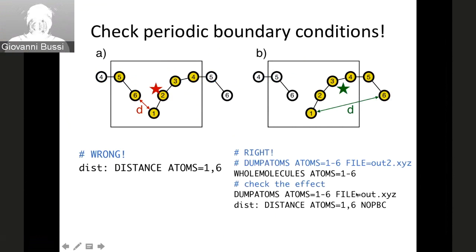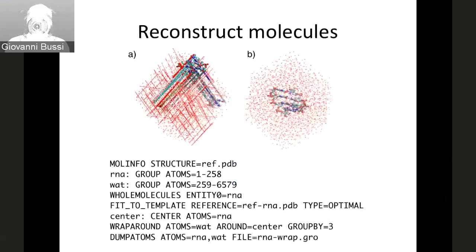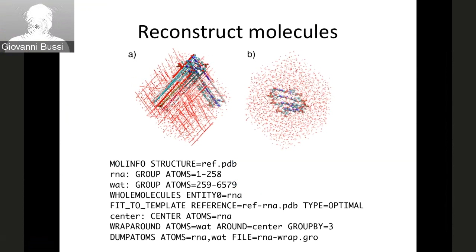Here is a more complicated example with a short RNA duplex in solution. The whole_molecules action makes the RNA molecule whole. The following action, fit_to_template, rotates and translates the coordinates of all atoms to minimize the RMSD with respect to a reference structure provided in a PDB file. The center action defines a new virtual atom placed at the geometric center of RNA. We then use a wrap_around action where all specified water atoms are shifted to the periodic image as close as possible to the RNA center, with the group_by_three option keeping individual water molecule triples whole. Finally, we dump the resulting coordinates to a file.